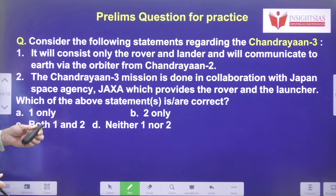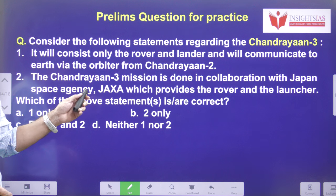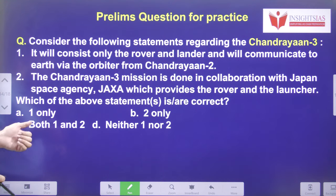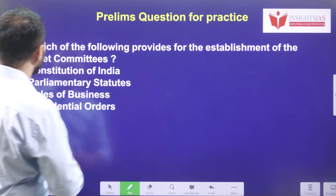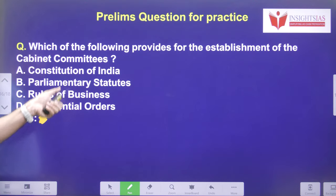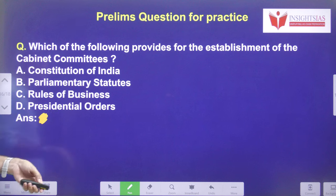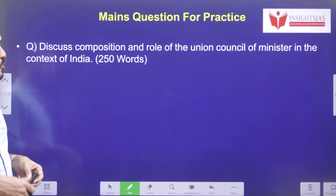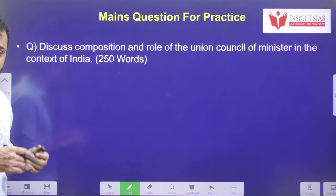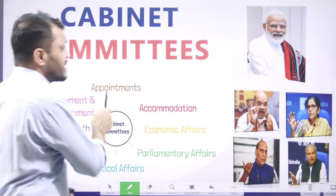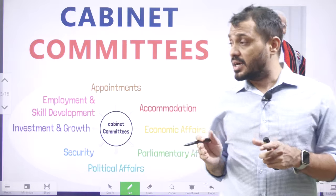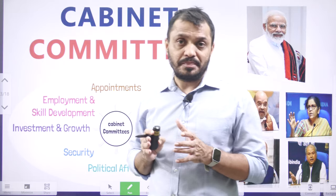For a study question on Chandrayaan-3: it consists only of the rover and lander, as the orbiter is reused from Chandrayaan-2 — the first statement is correct. Today's question: which of the following provides for the establishment of cabinet committees? The mains question: discuss the composition and role of the Union Council of Ministers in the context of India. This has been a detailed analysis of cabinet committees, with special discussion on the cabinet committee on security.